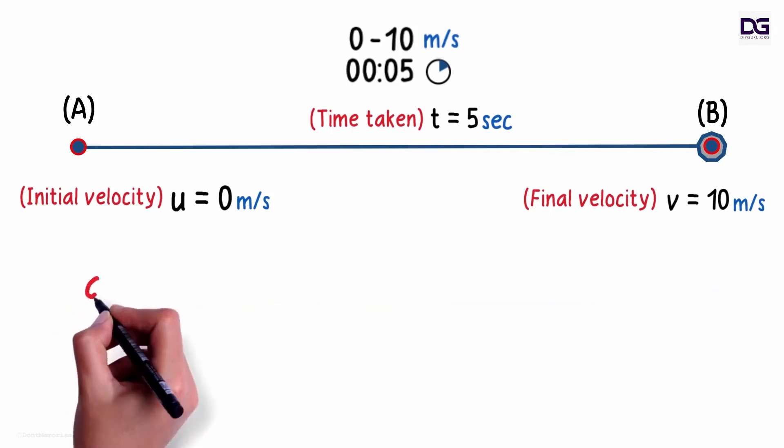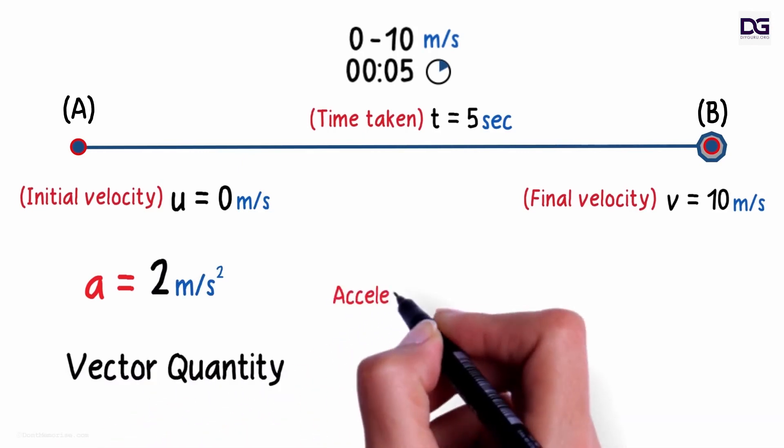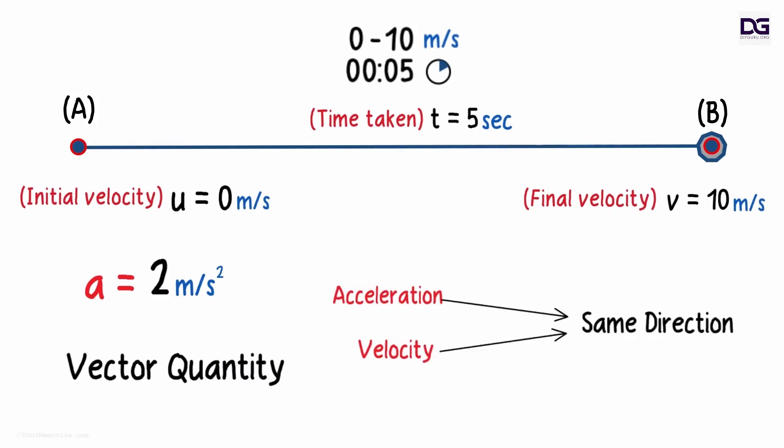So the acceleration in this case will be 2 meters per second squared, and acceleration is also a vector quantity. Here acceleration and velocity are in the same direction. There are many more important concepts about acceleration which we will cover in the coming videos.